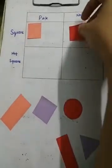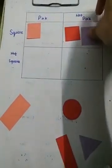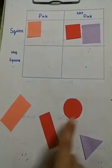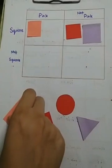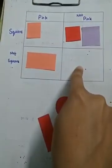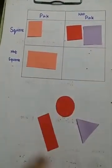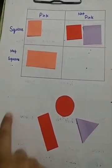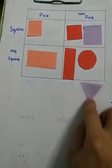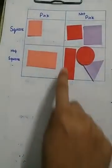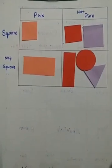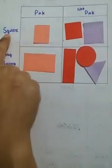Now a square of not pink color — there's a red square, so that also goes here. Now not a square but has pink color — which shape has pink color? Here it is, but it's not a square, so we'll put it here. Now not a square and not pink color — no shape is a square and no shape has pink color, so we'll put all these shapes here in this group. All these shapes are not squares and don't have pink color.